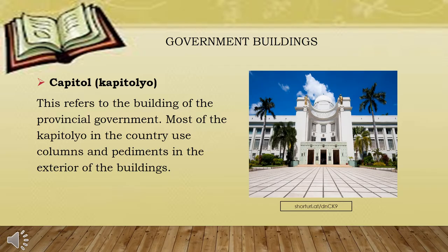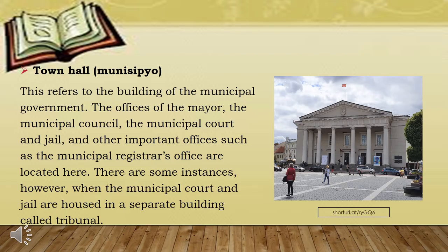Next is government buildings. First we have the Capitol or Capitolio. This refers to the building of the provincial government. The offices of the mayor, the municipal council, the municipal court and jail, and other important offices such as the municipal registrar's office are located here. There are some instances, however, when the municipal court and jail are housed in a separate building called tribunal.